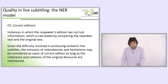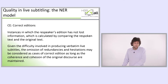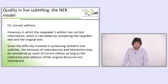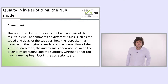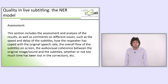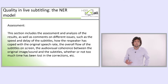Correct editions are instances in which the respeaker's edition has not lost information, calculated by comparing the respoken text and the original text. Given the difficulty involved in producing verbatim live subtitles, the omission of redundancies and hesitations may be considered as cases of correct edition, as long as the coherence and cohesion of the original discourse are maintained. The assessment section includes analysis of results and comments on speed, delay, how the respeaker coped with the original speech rate, the overall flow of the subtitles, audiovisual coherence, and whether too much time was lost in corrections.